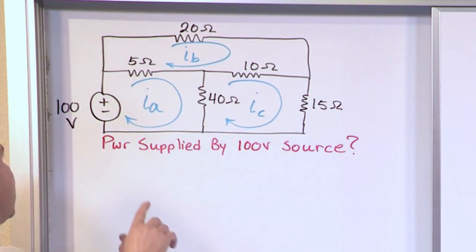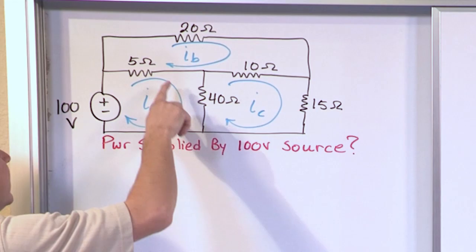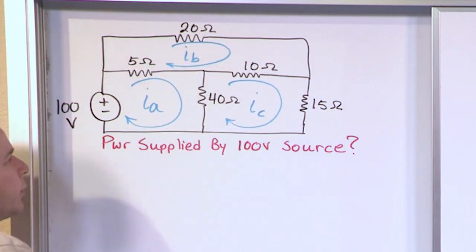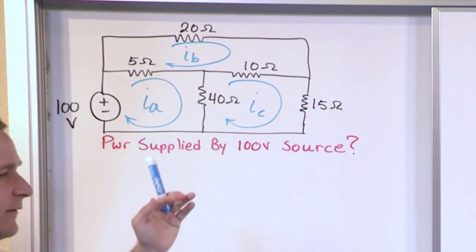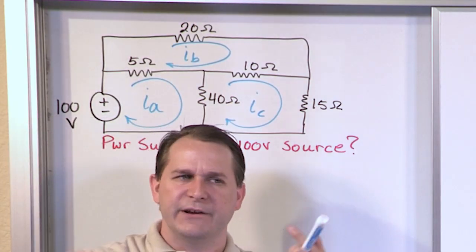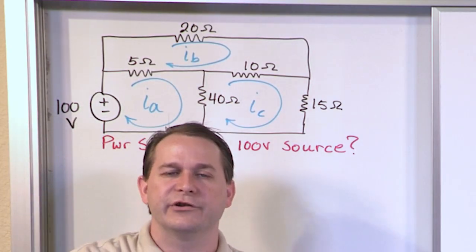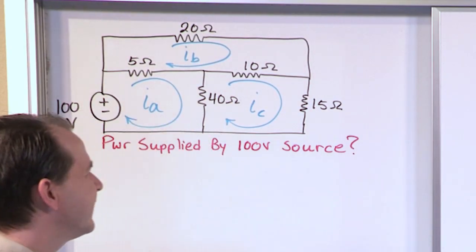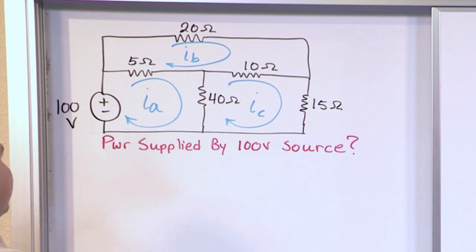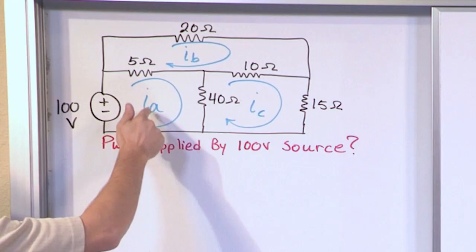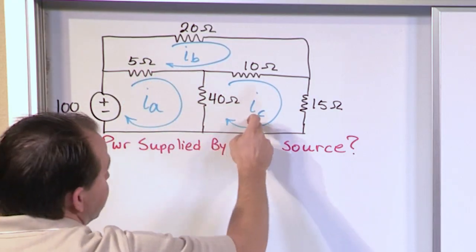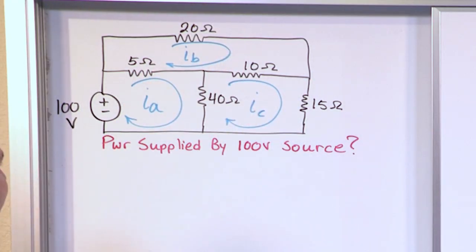When you force yourself to draw the mesh current directions, it helps you visualize what you're doing as you go around the circuit. When I get to a shared leg, I'm going to have to subtract two currents, and drawing helps me visualize which direction the mesh currents are going. So don't skip that step — don't just say 'this is mesh A, B, and C' and jump straight to writing equations. Always draw the circles for A, B, C first.